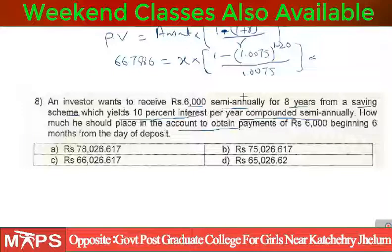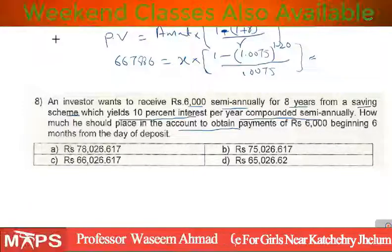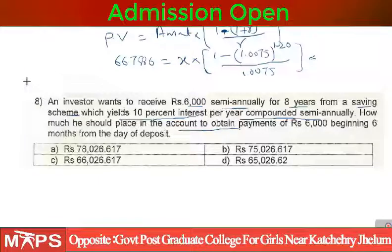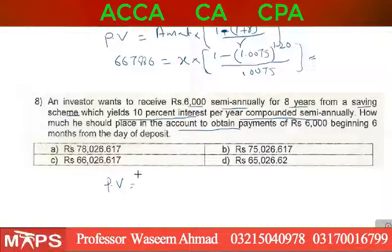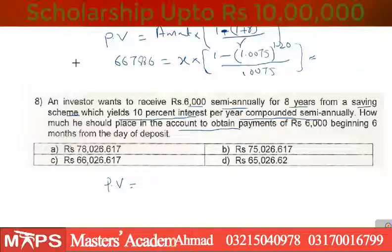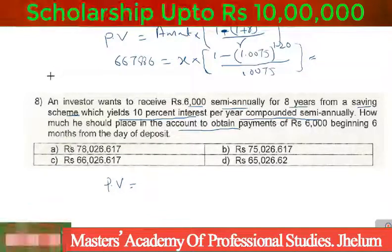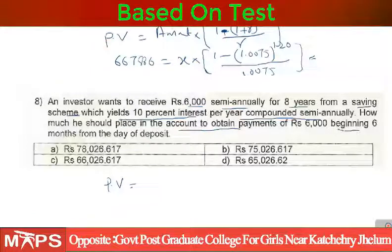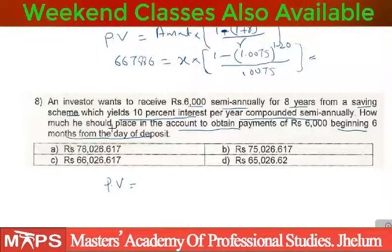Basically, he will deposit an amount and over the next 8 years he will withdraw $6,000 per semiannual period. He will deposit the present value — the amount to be found — and since the payments begin 6 months from the day of deposit, the amount is due at the end of the first semiannual period.